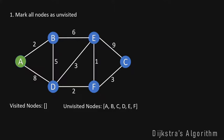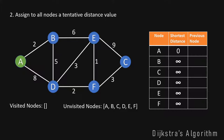In the second step we assign to all nodes a tentative distance value that will be changed over time. We use a table on the right with three columns: the node, the current shortest distance from A to that node, and the previous node that leads us to this shortest distance. Initially, A is set to zero, every other distance is set to infinity, and the previous node column is empty.